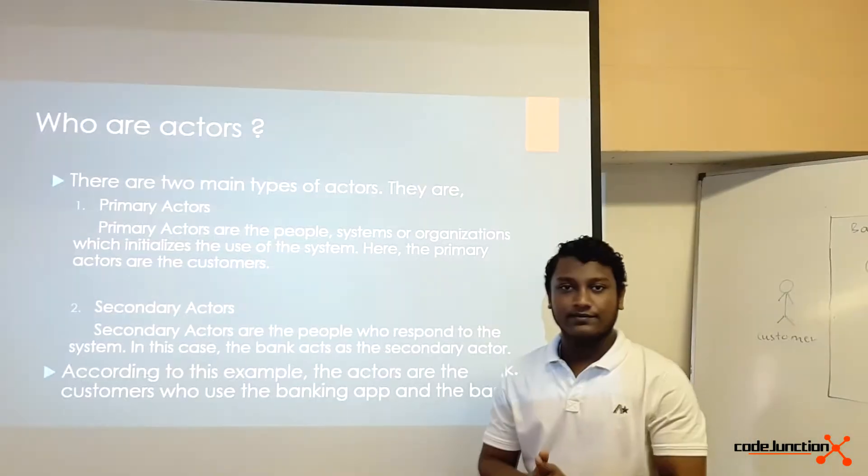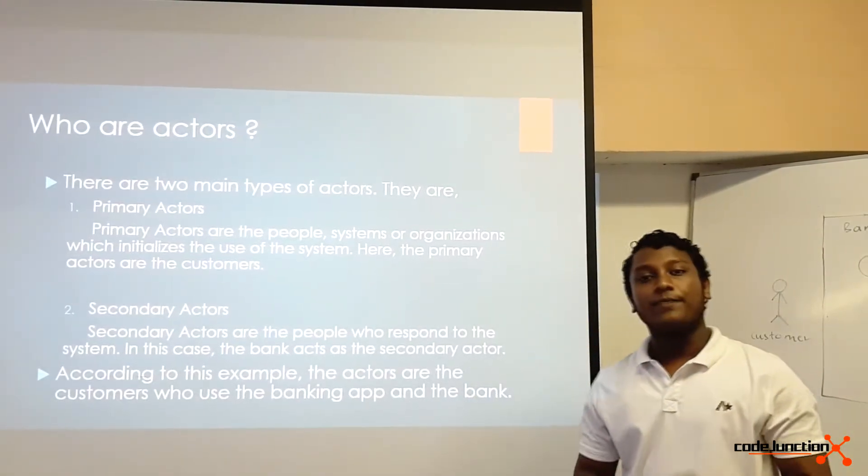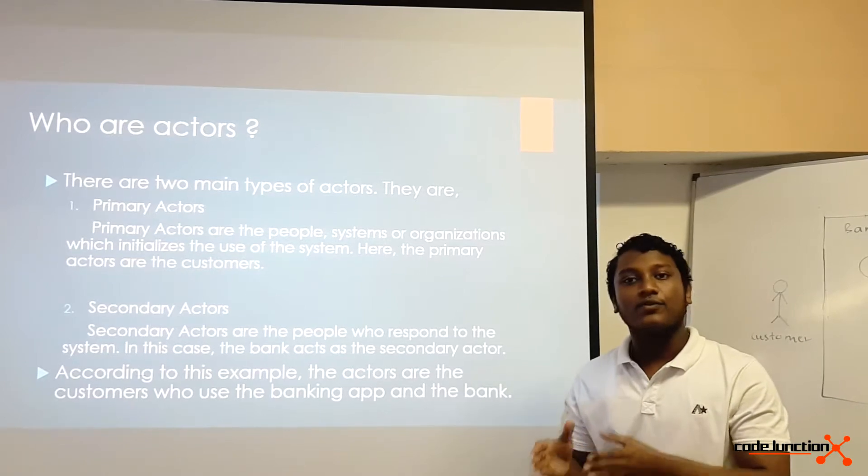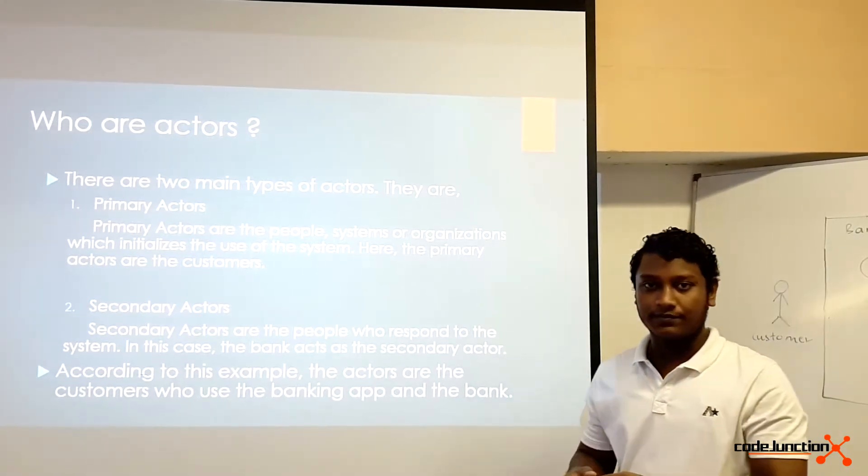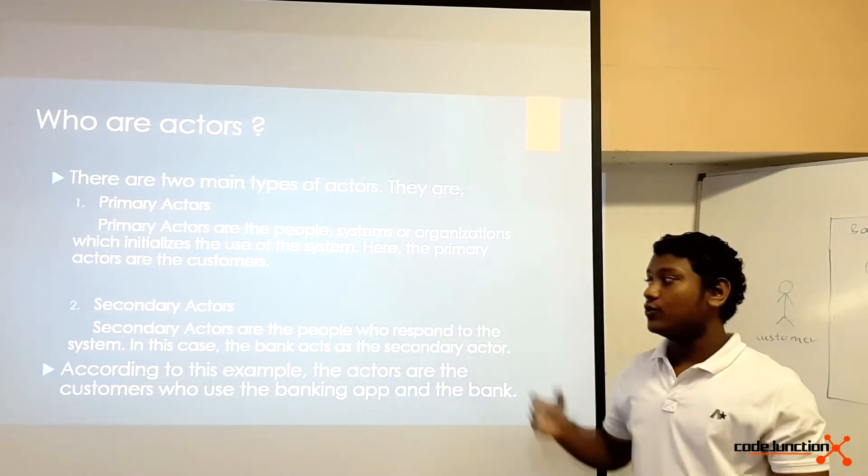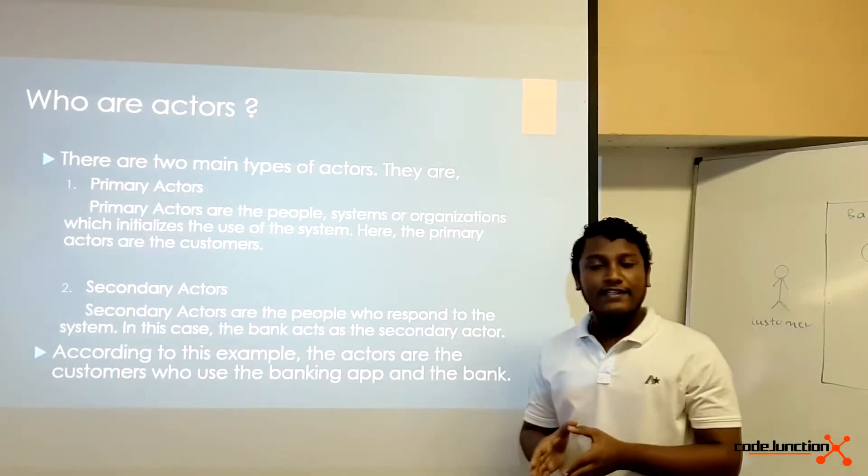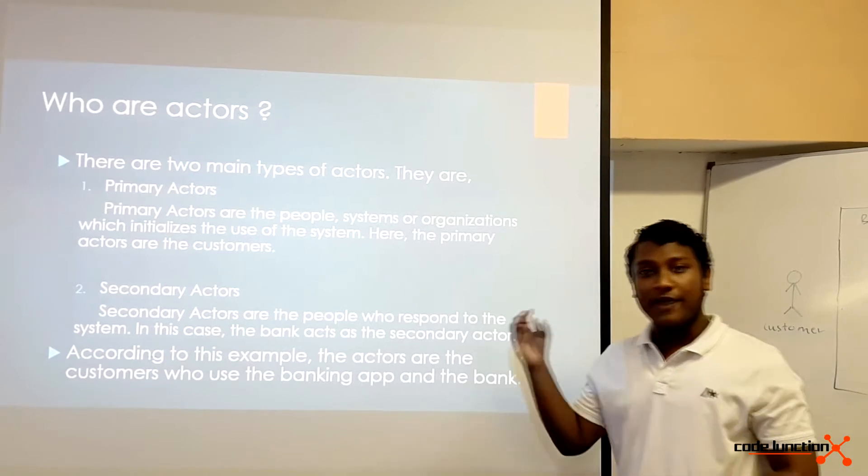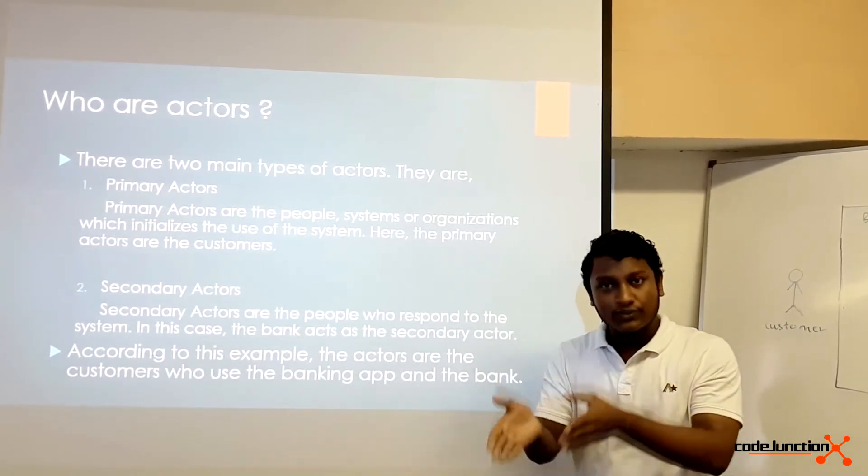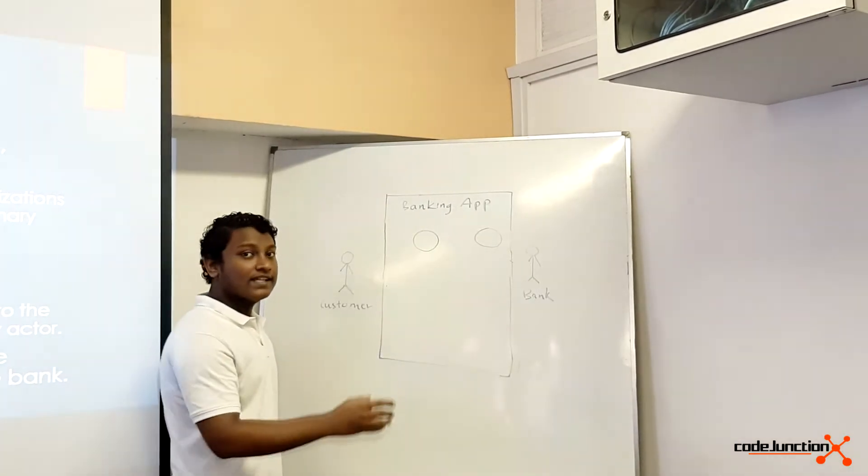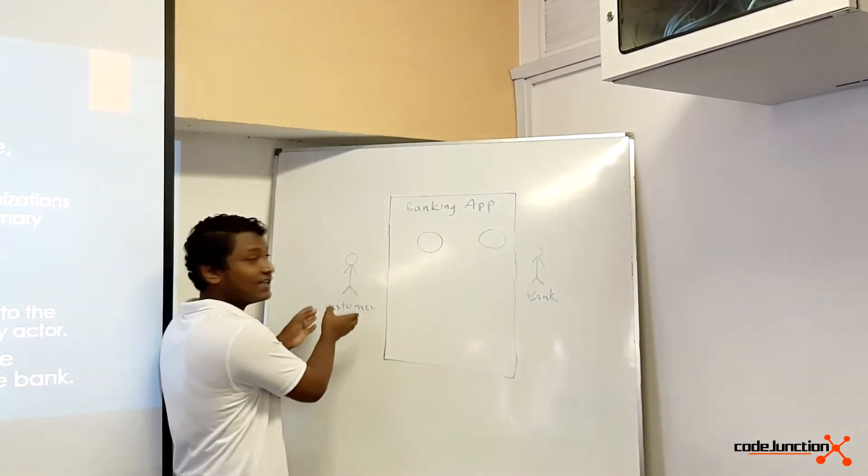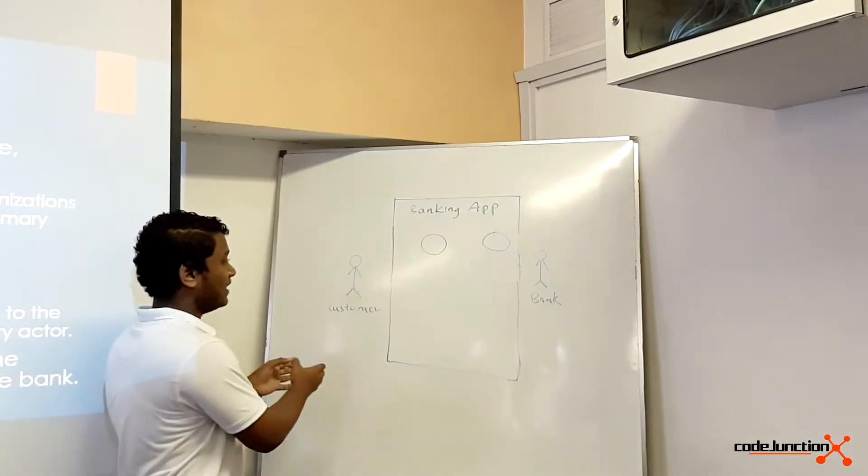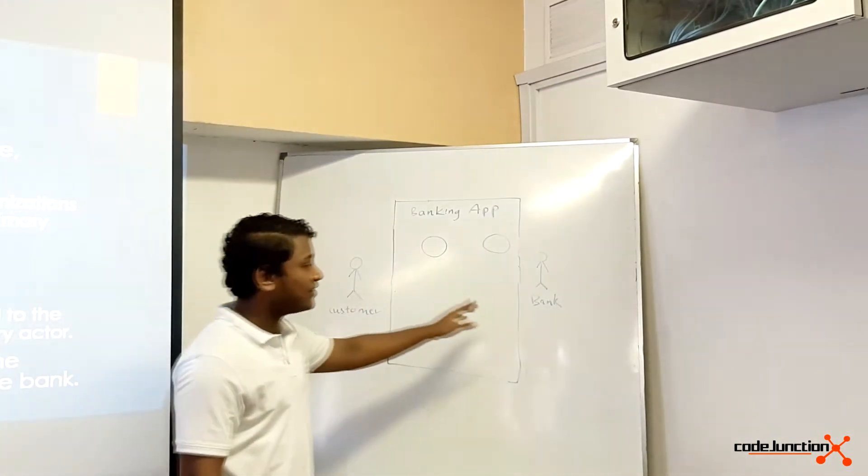Then comes actors. There are two types of actors: primary actors and secondary actors. Primary actors are the people, systems, or organizations which initialize the use of the system. The secondary actors are the people who respond to the system. In this case, the primary actor is the user who uses the banking app, and the secondary actor is the bank who helps the user. In use case diagrams, it's standard to put the primary actor on the left side and secondary actor on the right side.